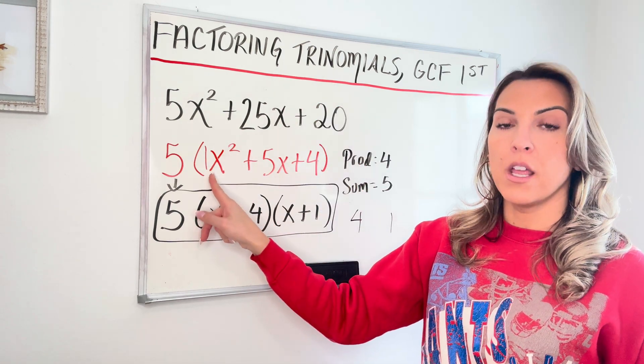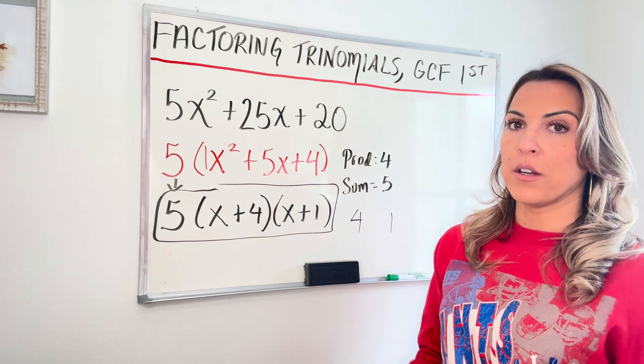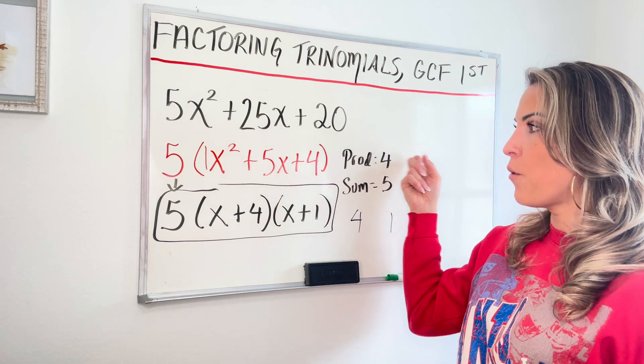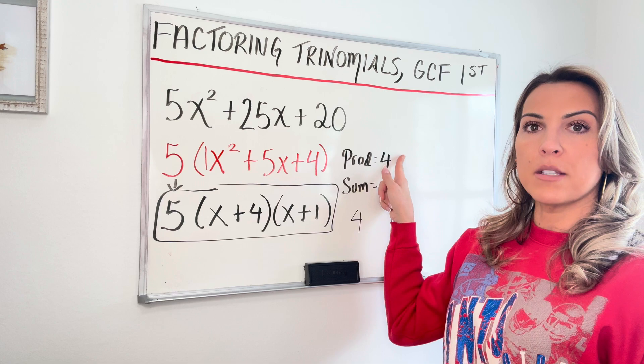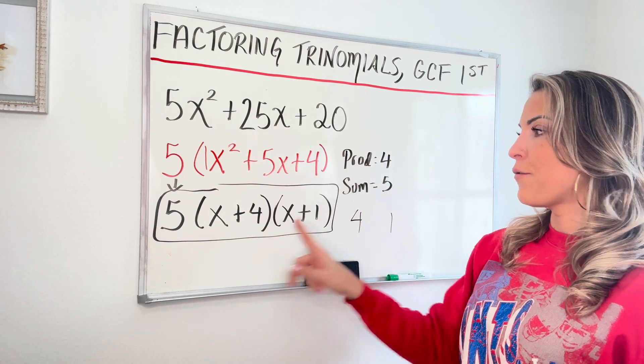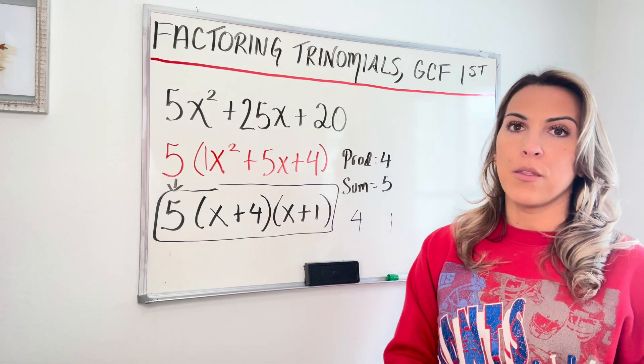And because it was one, we were able to do our product and sum method that we learned in the previous video. So product was four, sum was five, two numbers that multiply to four and add to five were one and four. And that's why those went in the parentheses.